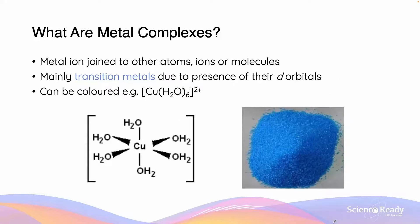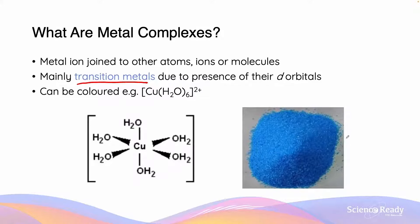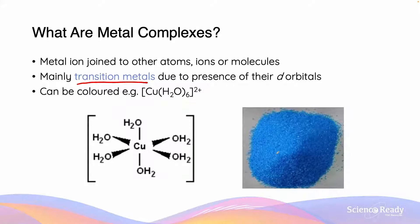So what are metal complexes? A metal complex is formed when a metal ion is joined to other atoms, ions or molecules. The metal ions which exist in the metal complex are usually transition metals due to the presence of their d orbitals. These d orbitals enable the substance to engage in coordinate covalent bonding, which we will discuss later. Metal complexes which consist of transition metals are usually colored. For example, copper hexahydrate has a molecular structure demonstrated on the left hand side and has a physical appearance of blue crystals shown on the right hand side.